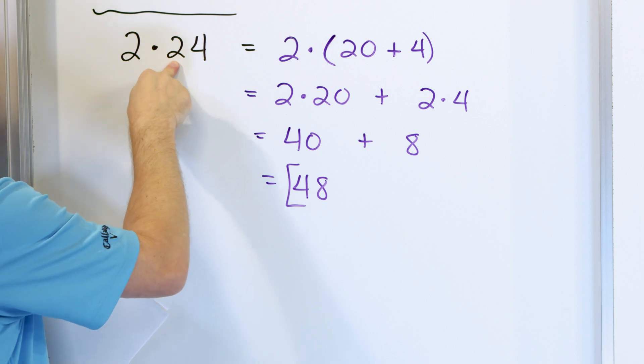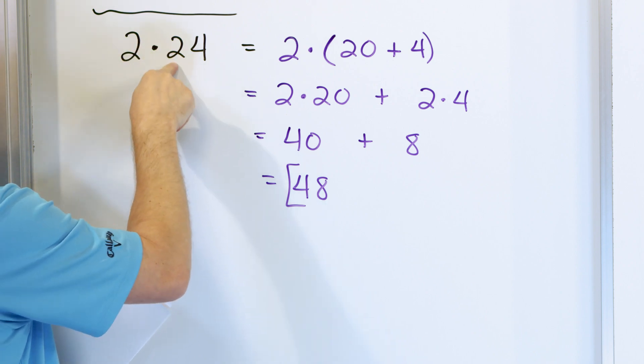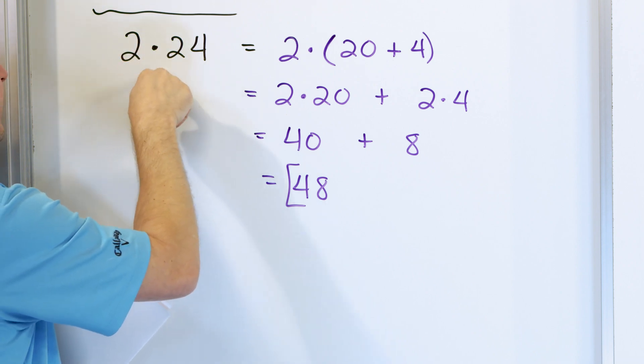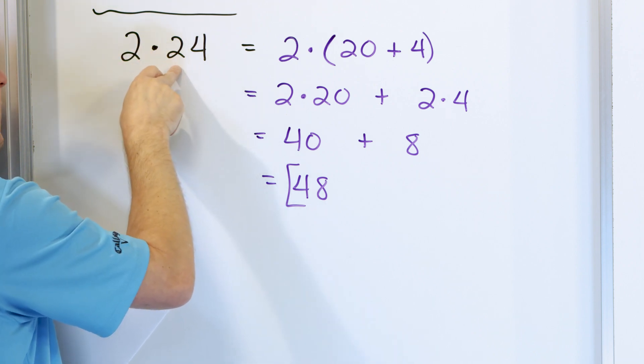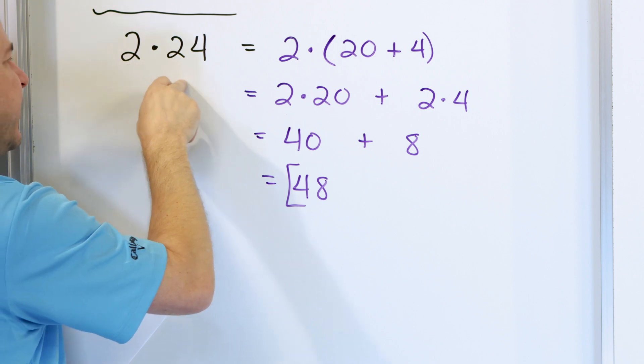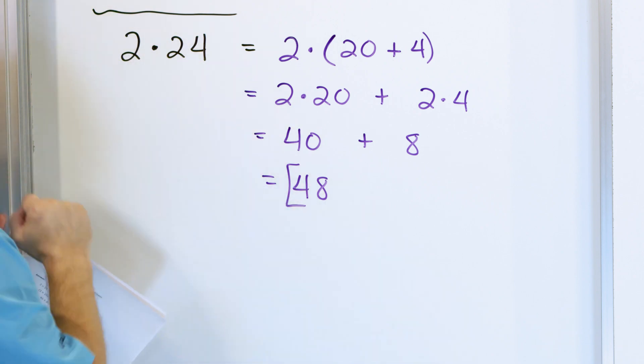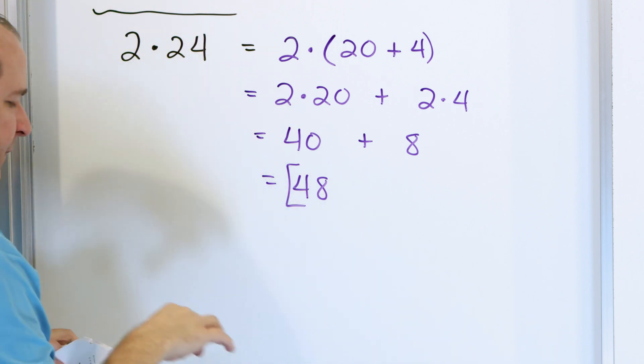So in your mind, when you're looking at this, don't think of that 2 as a 2 — think of it as 20. So you say 2 times 20, that's 40. And then 2 times 4 is going to give me 8, and together is 48. Boom, the answer is 48.